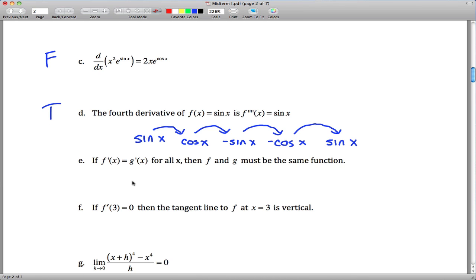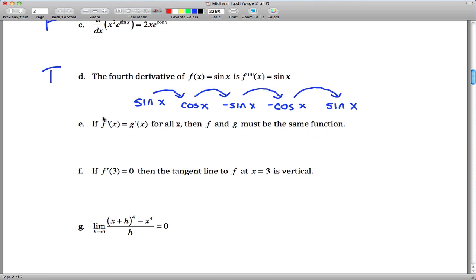Part E: if two functions have the same derivative everywhere, then they must be the same function. This is false. This is just saying they have the same slope everywhere, not necessarily the same function. One could be the other one just shifted up a little bit. For example, f(x) equals x squared and g(x) equals x squared plus 3. This guy is just shifted up. The slopes will be the same. If you take the derivatives, they'll be the same, but they're clearly not the same function.